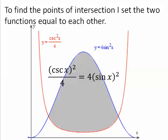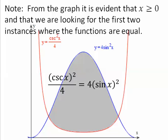To find the points of intersection, I set the two functions equal to each other. From the graph, it is evident that x is 0 or positive, more likely positive, and that we are looking for the first two instances where the functions are equal.